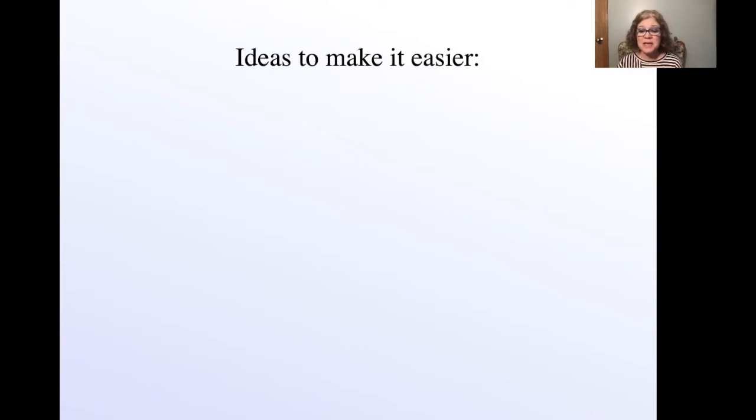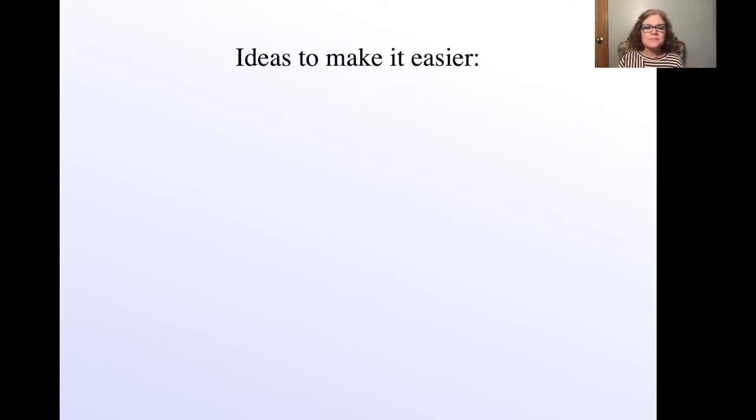So here's some ideas to make it easier for your family. The first thing that I did was we only did a section of the multivide at a time. So that could be a predetermined number of multivides. So many times I would just say, let's do a multivide of seven five times. So that meant we would do seven times two, times three, times four, times five, all the way to the five. And then they would be done.